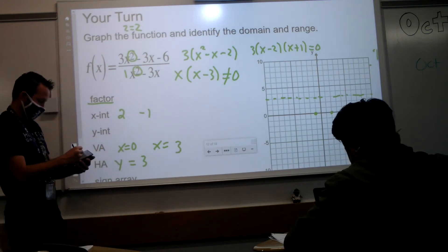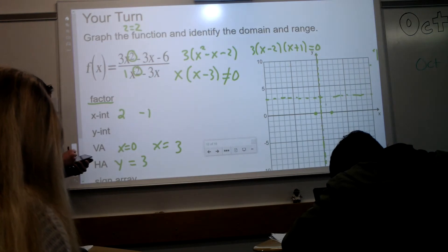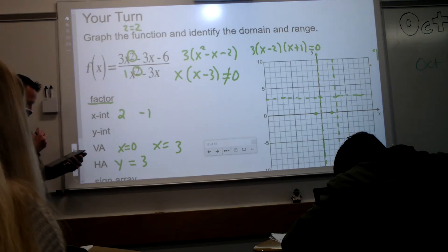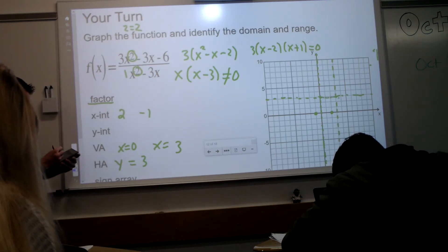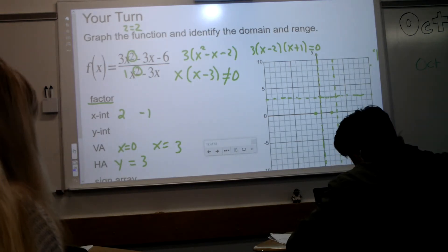There you go. So I'm going to put a vertical asymptote at zero, and then at three, just like that. Alright, Hiram, the only thing really left here is the y-intercept, what can you tell us about it?